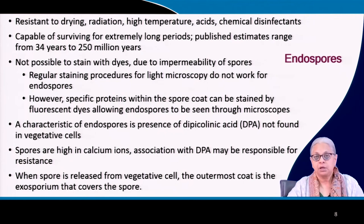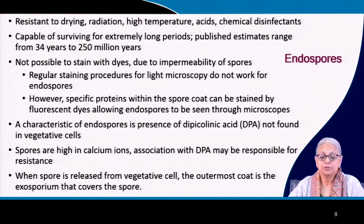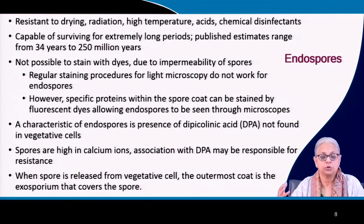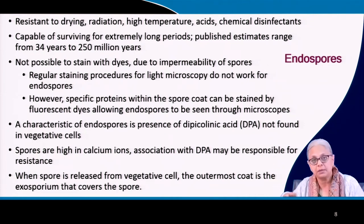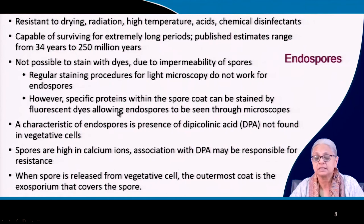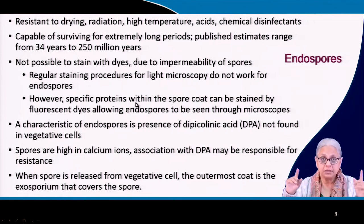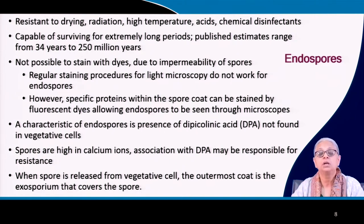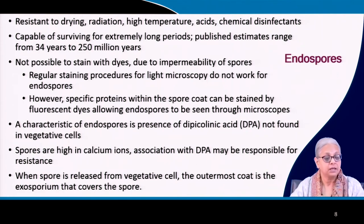Then we come to endospores. Endospores are what bacteria create when they are in an extremely hostile environment — less moisture, harmful radiation, temperature too high, pH too low, or chemical disinfectants are present. Under any of these conditions, the bacteria is unable to survive in what we call a vegetative state — it cannot survive, it cannot reproduce. So it creates a different organelle called the endospore just to survive in a hostile environment.